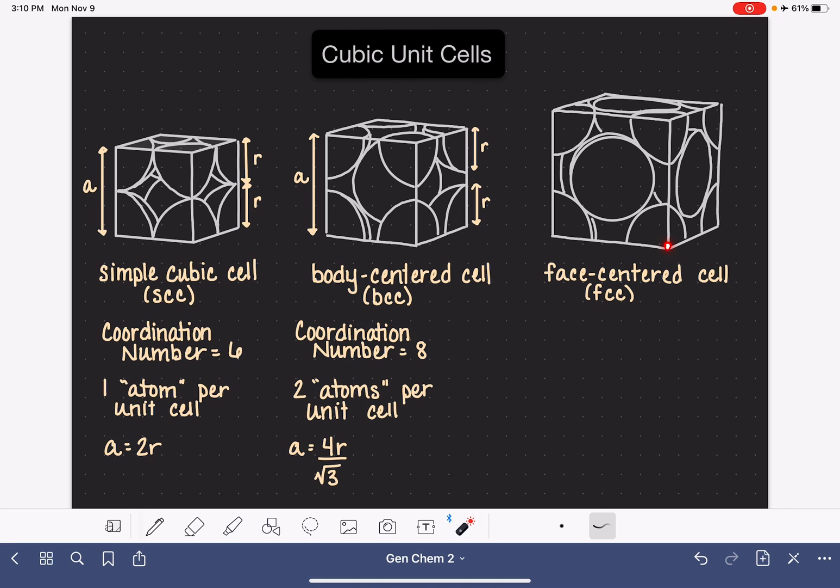So at each corner of the unit cell, there is one-eighth of an atom in that particular position. In addition, the face-centered unit cell has a portion of an atom located along the face of every side of the cube. And this represents one-half of an atom.